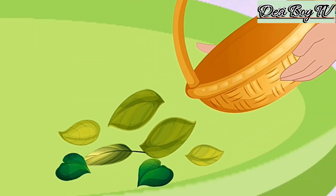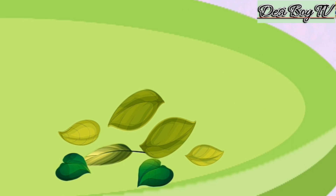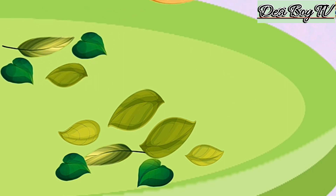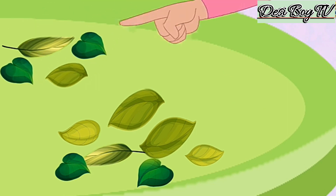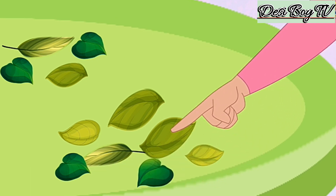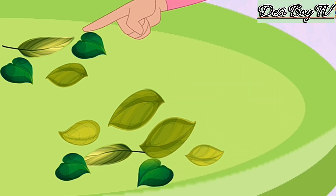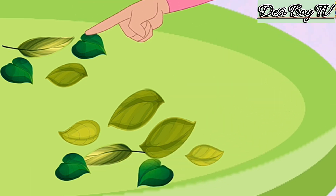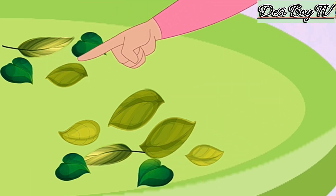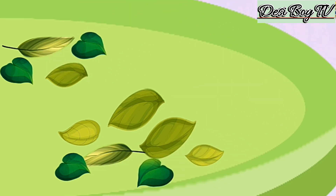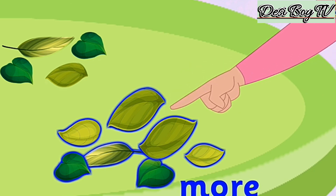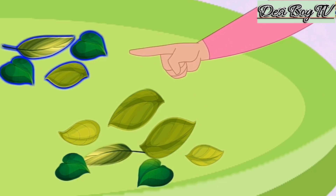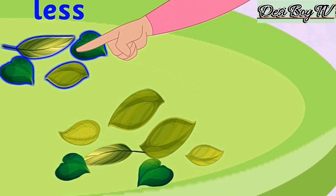Rhea and Arjun have collected some leaves. Let us have a look. This bunch has seven leaves. This one has four leaves. This is more. This is less.